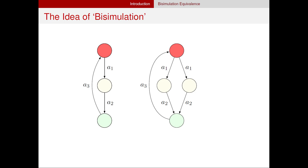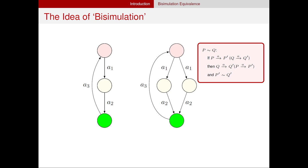Here is another system. The difference is that it has two yellow signals. From the red signal, it can choose the next step non-deterministically. For example, we can choose the left one and then go to the green signal. This system also fulfills all the functions of the traditional signal. After doing the same action, it can go to the same state. That's the idea of bisimulation: if a system can do an action, another system can do the same action, and then they go to the same state.